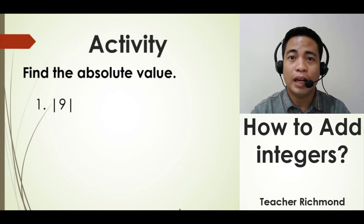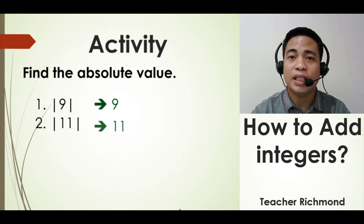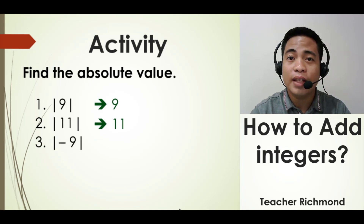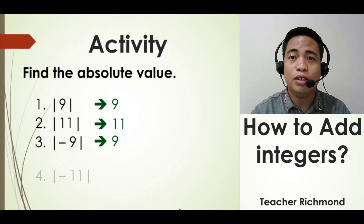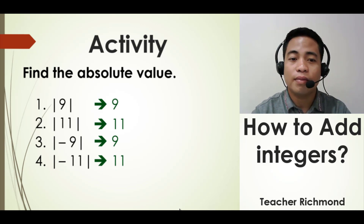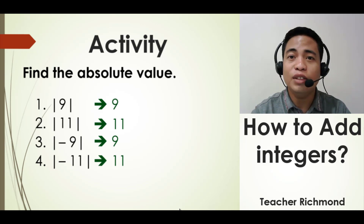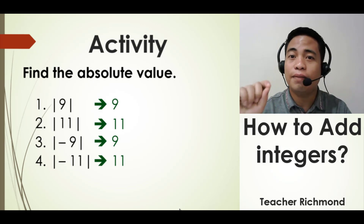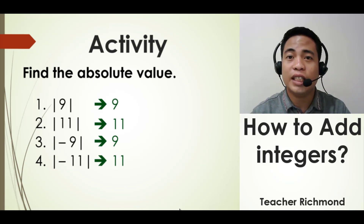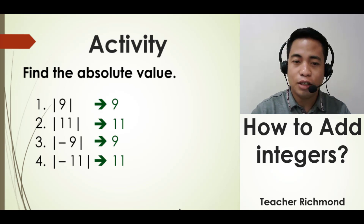For example, the absolute value of positive 9 is positive 9, the absolute value of positive 11 is positive 11, the absolute value of negative 9 is positive 9, and the absolute value of negative 11 is positive 11. We notice that the absolute value of a given number will always be positive because absolute value is just the distance from zero, and distance will always be positive — there is no such thing as negative distance.